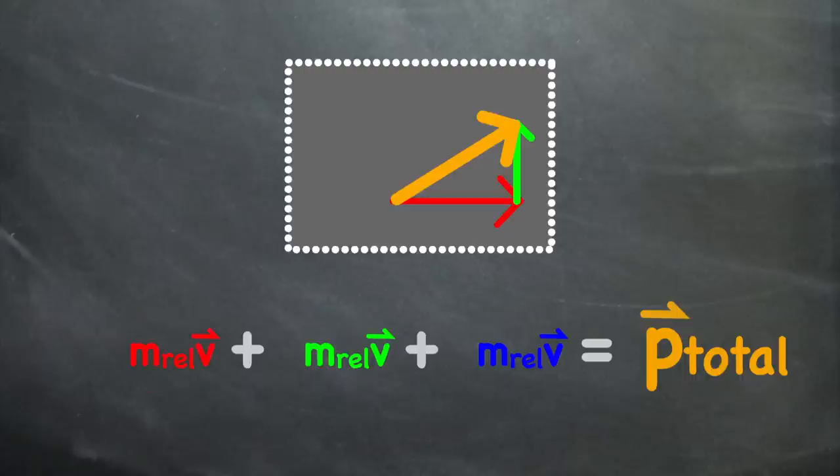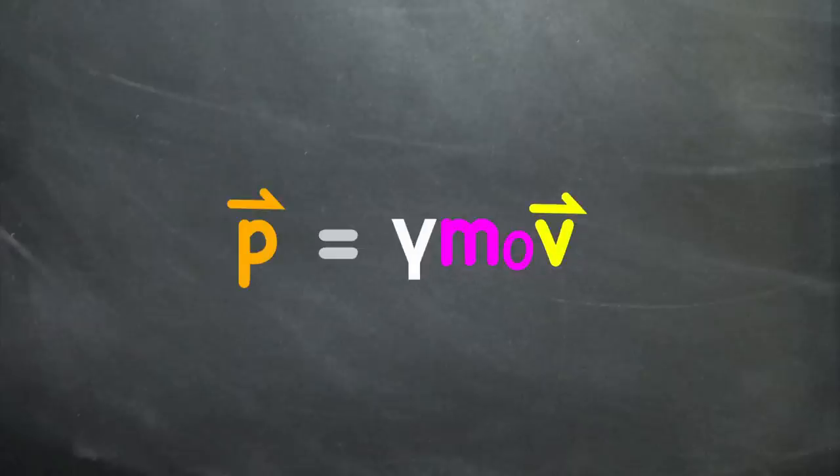But a different quantity ends up being conserved if we take relativity into account. Now, it's relativistic mass times velocity which is conserved, more commonly written as gamma times rest mass times velocity. So, this quantity is what momentum is in the theory of relativity.